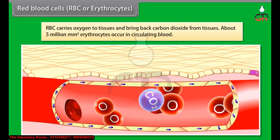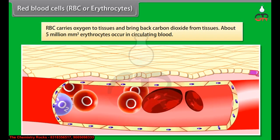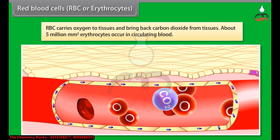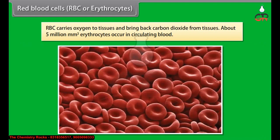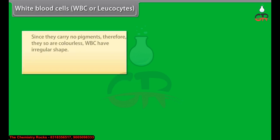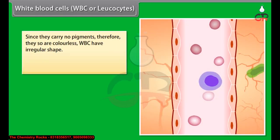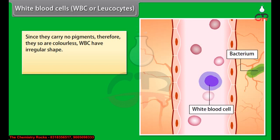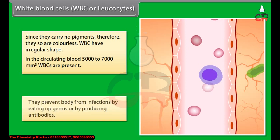About 5 million per mm³ erythrocytes occur in circulating blood. White blood cells (WBCs or leukocytes) carry no pigments and are therefore colorless with an irregular shape. In circulating blood, 5,000 to 7,000 per mm³ WBCs are present. They prevent the body from infections by engulfing germs or by producing antibodies.